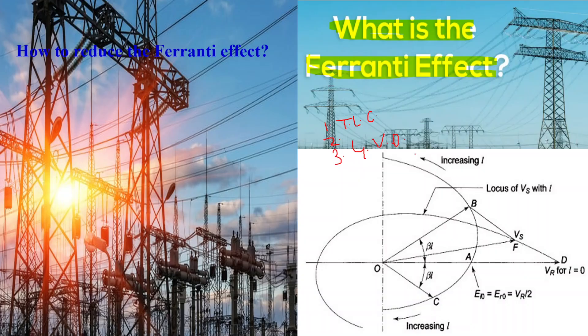Fifth, voltage regulation. Power utilities aim to maintain a relatively constant voltage level at the receiving end of the transmission line to ensure the efficient operation of electrical equipment and appliances connected to the grid. To achieve this, utilities adjust the voltage at the sending end using voltage regulation devices such as transformers and voltage regulators.